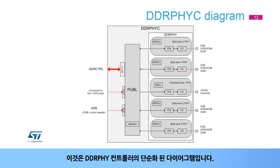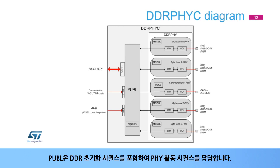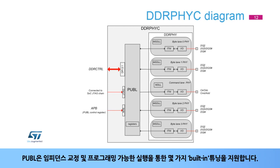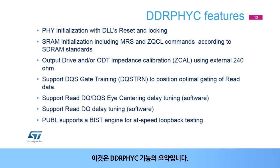This is a simplified diagram of the DDR-PHY controller. The Physical Utility Block, or PUBL, includes the control registers and several state machines. PUBL is in charge of sequencing the PHY activity, including the DDR initialization sequence. PUBL supports impedance calibration and several built-in tuning procedures with programmable execution. The MDLL and MSDLL generate clock phases to the internal timing modules, or ITMs.